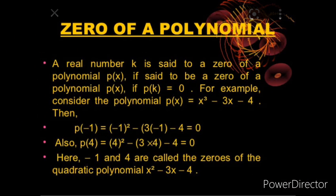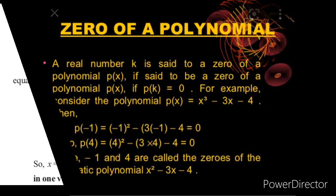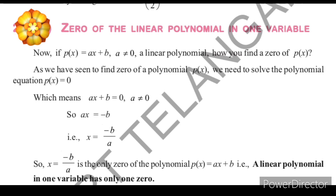See the definition here. A real number k is said to be a zero of a polynomial p(x), if p(k) equals to 0. You can see the example here. x³ minus 3x minus 4. Minus 1 and 4 are called zeros of the polynomial. See a zero of the linear polynomial in one variable.